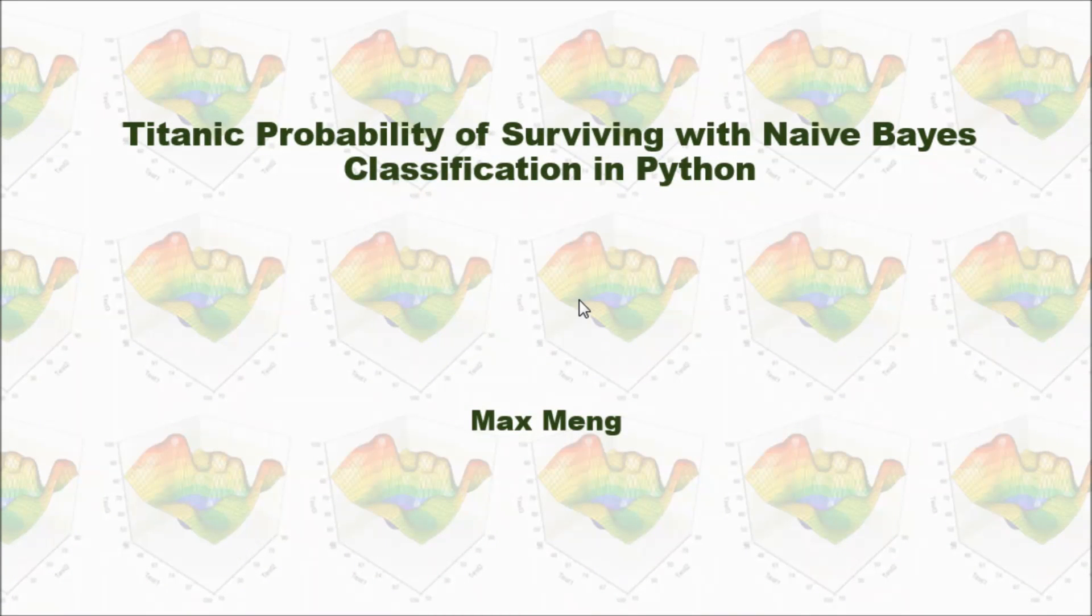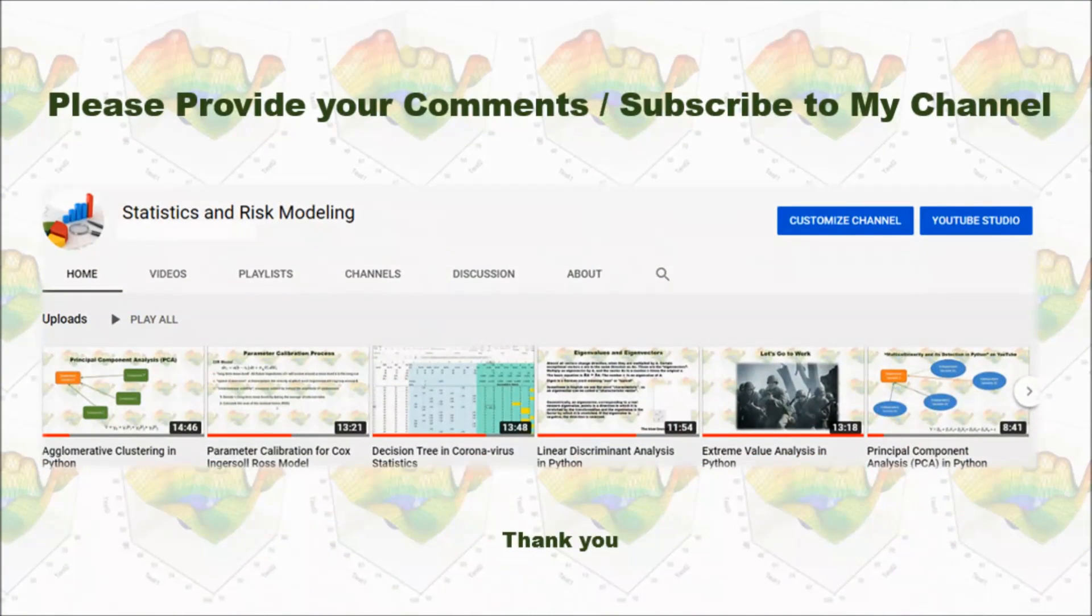This is how I analyze Titanic probability of surviving with naive Bayes classification in Python. Please provide your comments and subscribe to my channel. Thank you very much for watching.